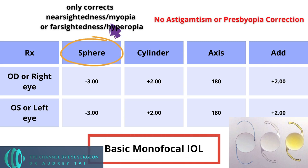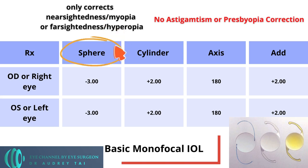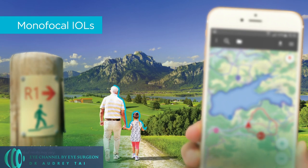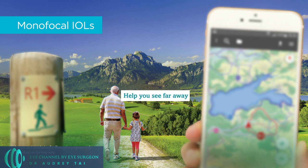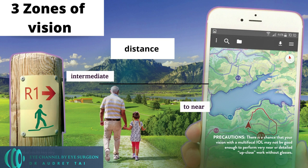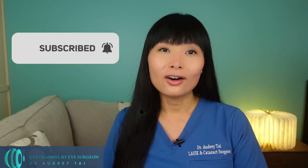The basic single vision implant, also called monofocal implant, only corrects the first number of the glasses prescription. This means it corrects the nearsightedness or farsightedness, but it does not correct astigmatism or reading glasses prescription. So if your eye has astigmatism and you choose to have a basic single vision lens implant, you will still need either glasses, contact lenses, or refractive surgery after the lens implant surgery in order to correct astigmatism. With monofocal lenses, you do have the option of selecting a target vision zone, but the other two zones will be blurry without correction. Hence, the implants are called single vision implants.